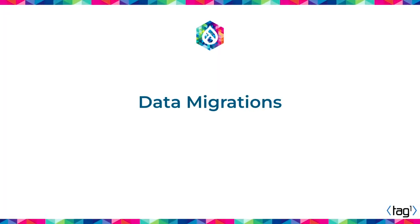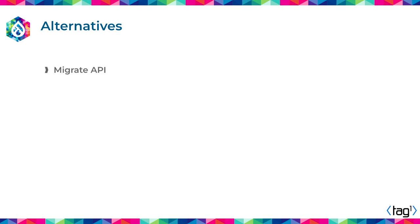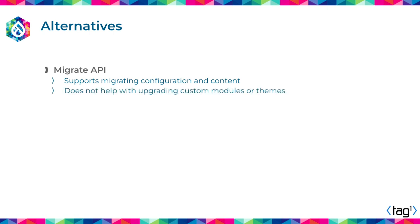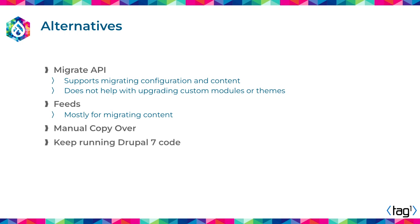Data migrations are the most complicated, expensive, time-consuming part of the migration. We're going to give you a high-level overview. You can use the Migrate API — my favorite — which supports migrating configuration and content, but doesn't deal with custom modules, themes, or infrastructure. You can also use the Feeds module, which mostly helps with migrating content. You can do a manual copy over if you have a simple or small enough website. And there is a project called Retrofit that allows you to run Drupal 7 code in a Drupal 10 codebase — the maintainer is a very prolific Drupal contributor called Matt Glaman.